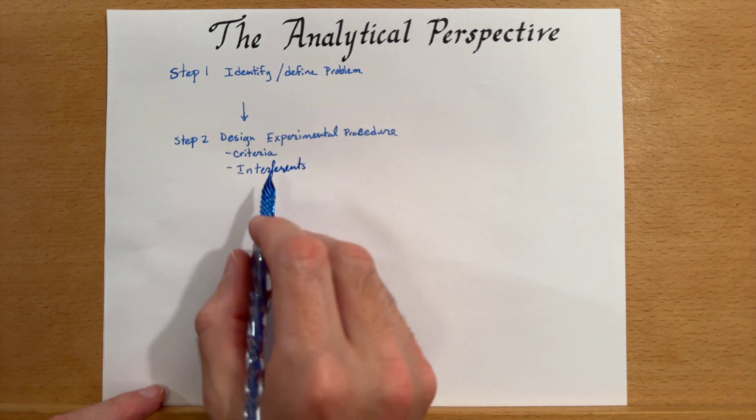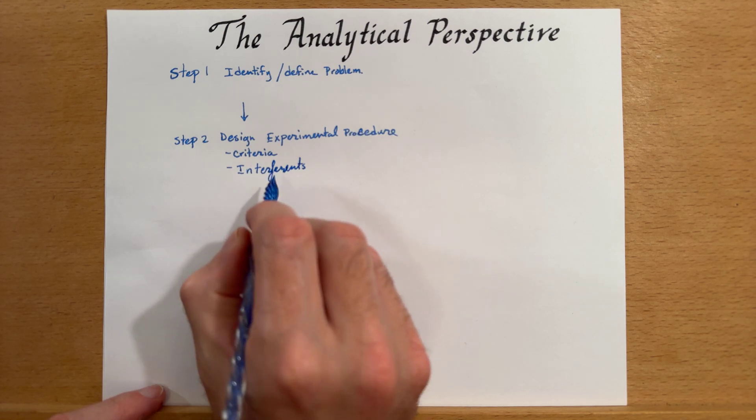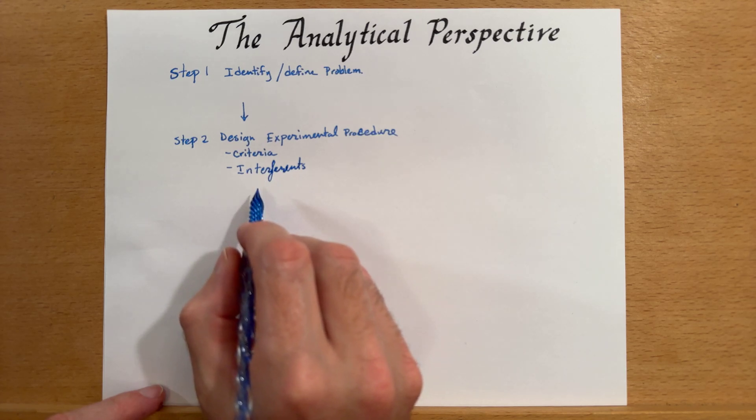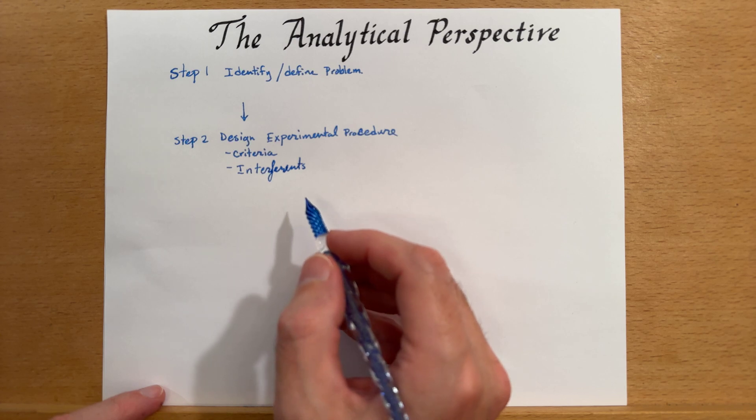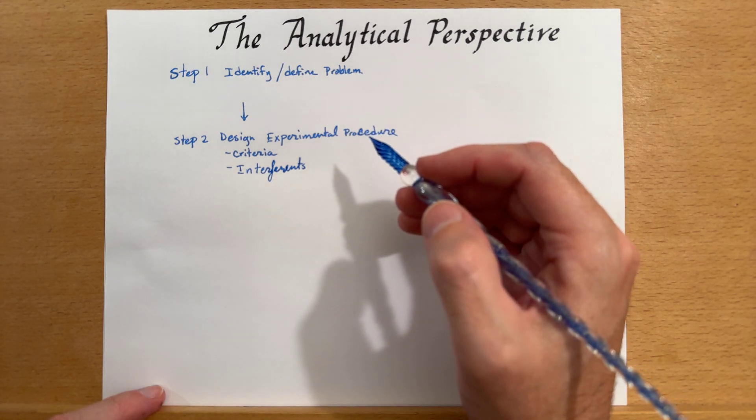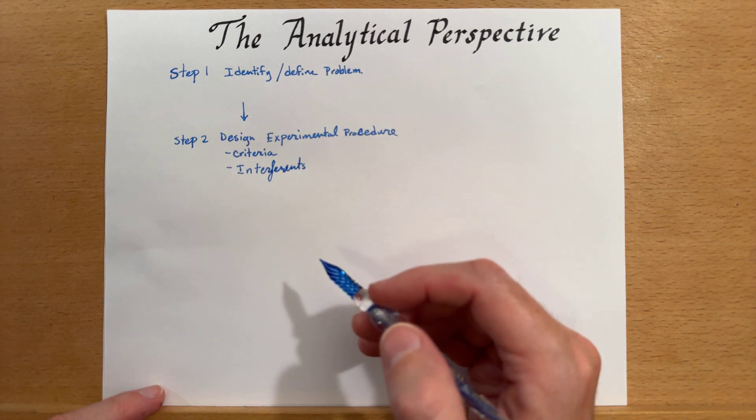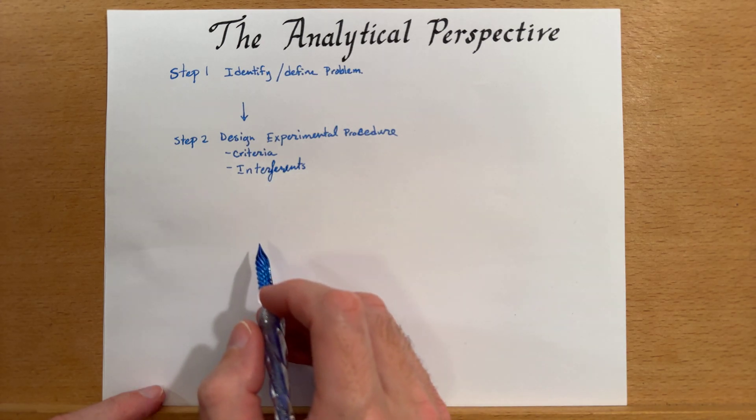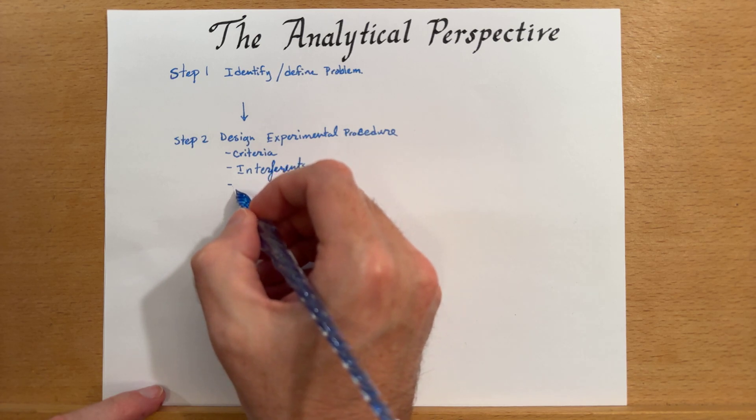So if there is something that we know is inside of our sample that will hinder or somehow interfere with the analysis process either by increasing how much we think something is in the sample or decreasing how much we think is in the sample, we have to have a way to deal with that. We also need validation.